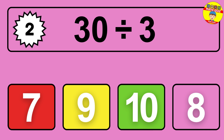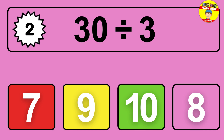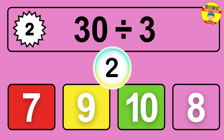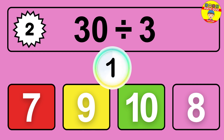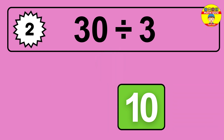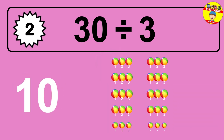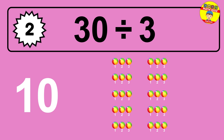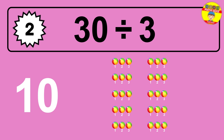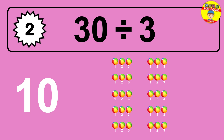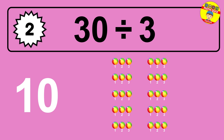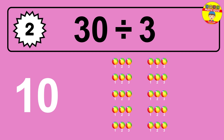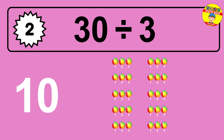What is 30 divided by 3? Picture this: you have 30 objects to divide into groups of 3. How many groups can you make? Let's think about it. Ready to find out? Let's break it down. Let's imagine you have 30 objects. Can you picture them lined up? Now think about splitting them equally into smaller groups.